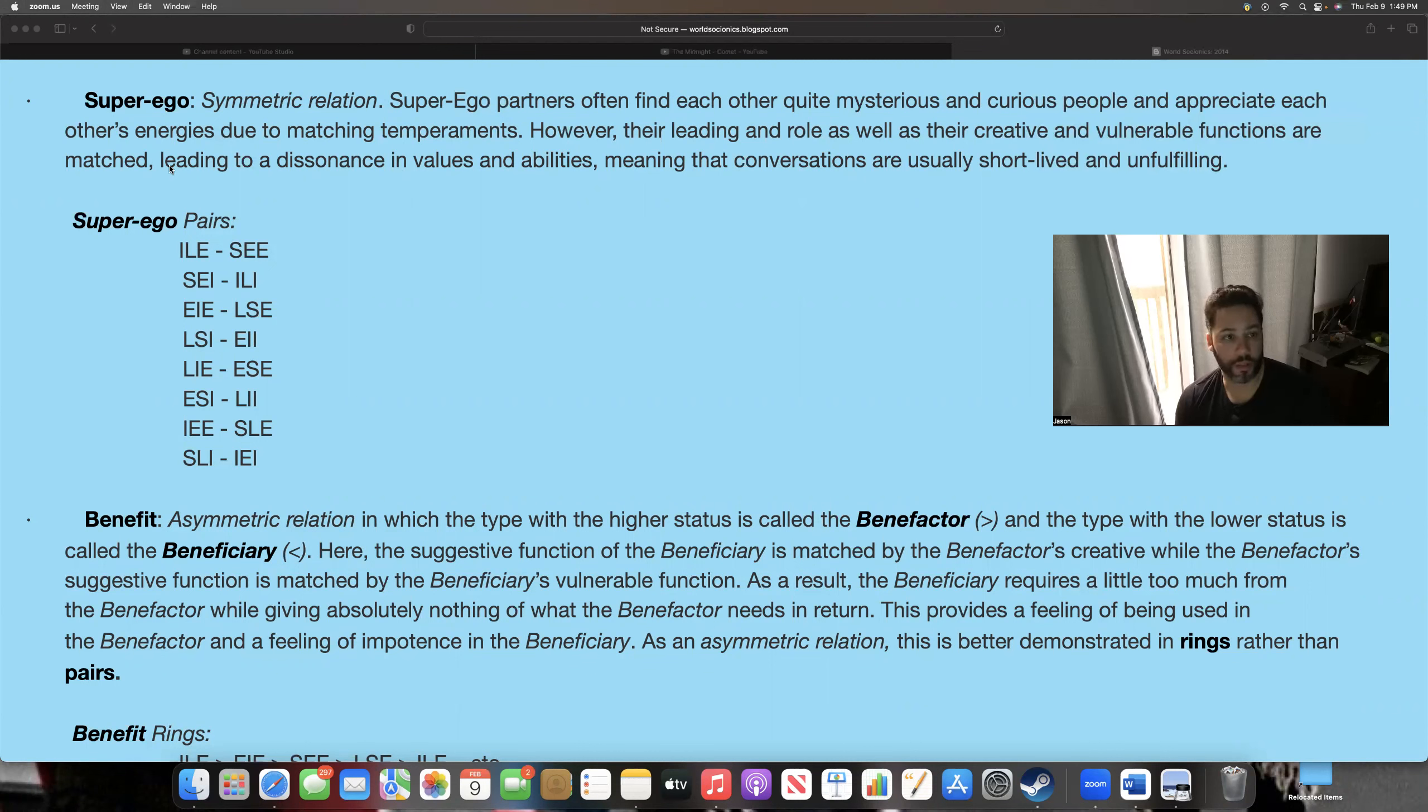So what happens here - super ego pairs often find each other quite mysterious and curious people and appreciate each other's energies due to matching temperaments. I don't know about the whole mysterious thing, but matching temperaments does make sense. Temperaments in socionics is usually the first and last letter. So if it's ENTJ, then it's EJ, and ESFJ is EJ. So the EJ is the same temperament.